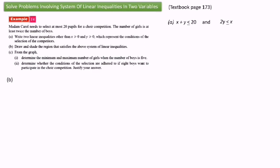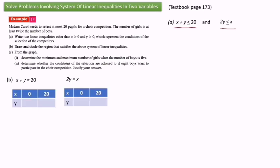Part B: draw and shade the region that satisfies the above system of linear inequalities. Before we draw and shade the region, we first need to write two linear equations based on the answer in part A. The first equation is x plus y equals 20, and the second equation is 2y equals x. Draw a simple table; the minimum value of x is zero and from the equation the maximum is 20. We use these equations to find the value of y.